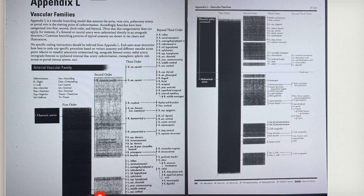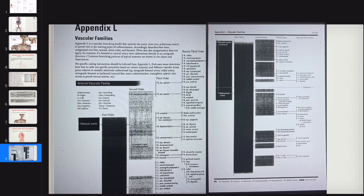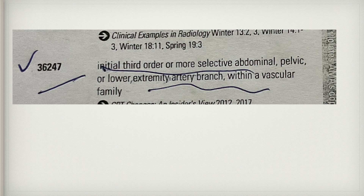For example, the left ulnar artery — by hearing the name, you should know it is an upper extremity artery situated above the diaphragm. Then go directly to the above-diaphragm area of Appendix L to locate the vessel and check its order. Code 36247 covers the initial third-order or more selective abdominal, pelvic, or lower extremity artery branch. For additional third-order vessel branches, there is an add-on code: 36248.